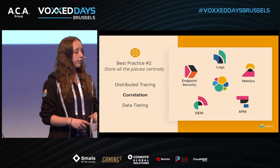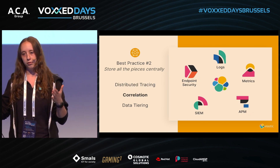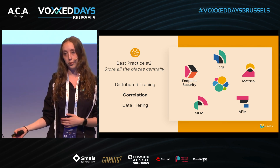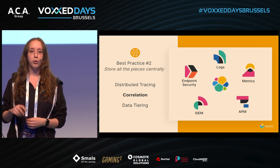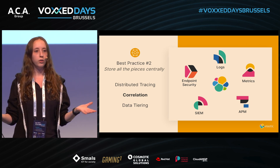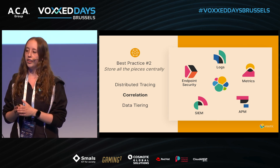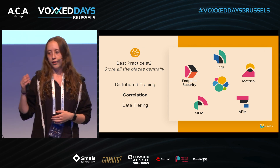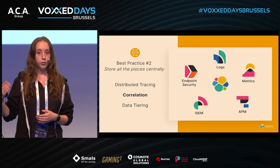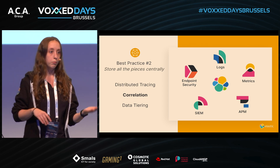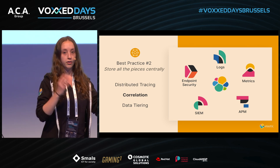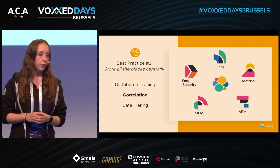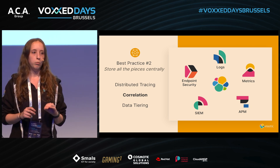We have traces, we have logs, we have metrics, but also security data. It's super powerful to have all your different data in one single system so you can correlate between this data. You can look at a log — for example, a certain error log — and jump to the metrics of that JVM server. It's really powerful to have all your data in one single place.